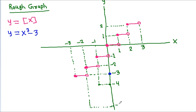The graph decreases very fast for negative x, so it will never cut y equals greatest integer of x in that region.